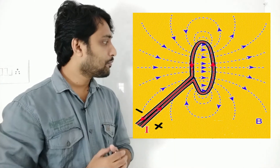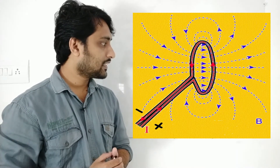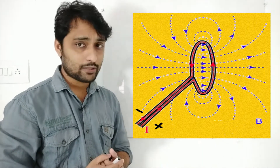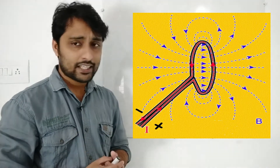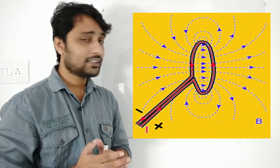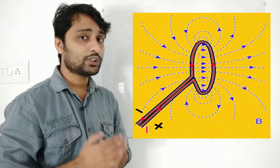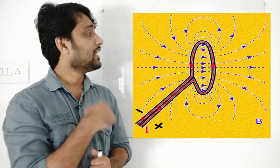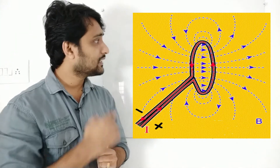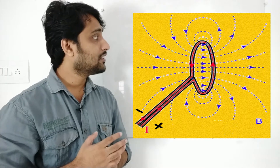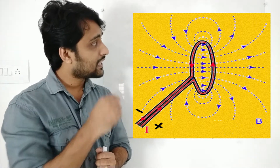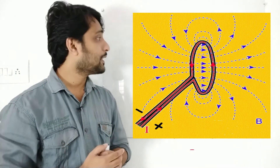One end of the positive terminal is connected and another end of the negative terminal is connected. We know that the direction of the current is always from positive to negative. So the direction of the current in the loop is from positive to negative.